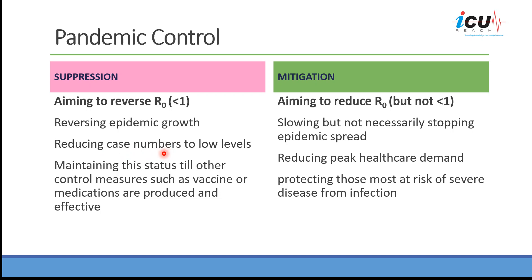However, we need to maintain this status until other control measures, such as a vaccine and/or medications, are produced and effective. Compared to the mitigation strategy, which aims to reduce the R0 without decreasing it below 1. This will slow the progression and the spread of the disease, but not necessarily stopping the epidemic spread completely.